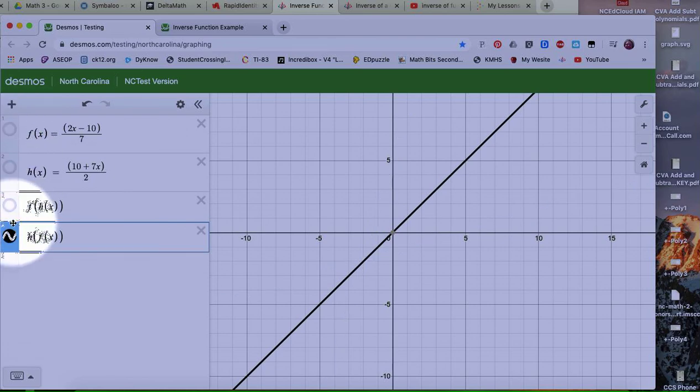And as you can see, if there's the line of h of f of x and f of h of x, they are the same line. So yes, they are inverses because they're the same line. So that is one way you can use decimals to find out if they are inverses.